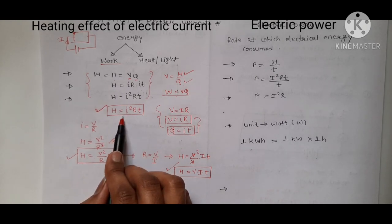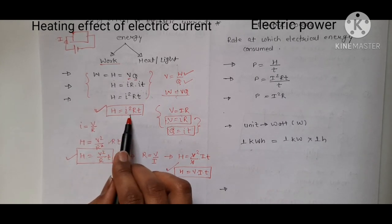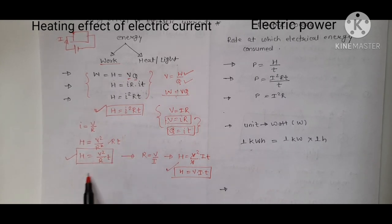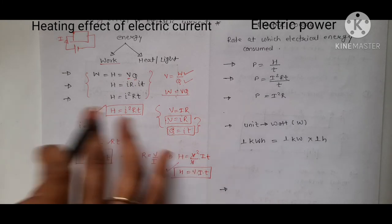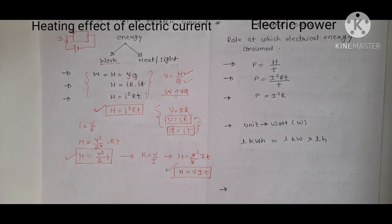So we have three important formulas for heating effect: First, H = I²RT. Second, H = V²T/R. Third, H = VIT. All three formulas are very important for solving numerical problems.